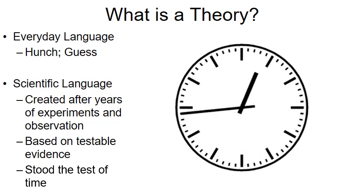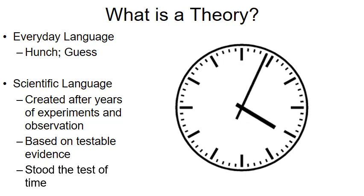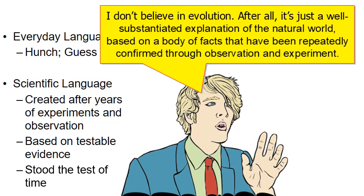Theories have stood the test of time — they've withstood years of experimentation, observation, and even criticism. For a scientific theory to still be valid after all that is a pretty strong statement. Here we have a person saying 'I don't believe in evolution — after all, it's just a theory.' When this argument is made, the word 'theory' is being used as if it means a hunch or a guess. But applying the scientific definition, he's really saying: 'I don't believe in evolution — after all, it's a well-substantiated explanation of the natural world based on facts repeatedly confirmed through experimentation and observation.' His argument loses a lot of validity. A theory is by no means a hunch or a guess.